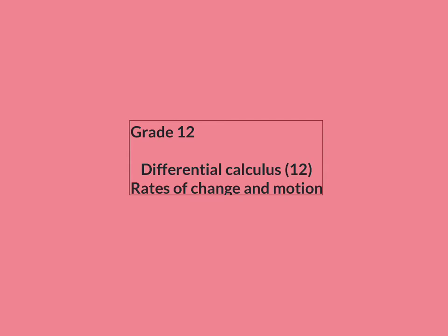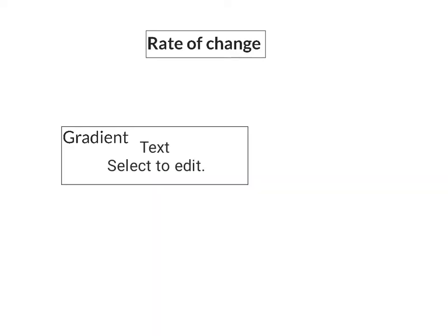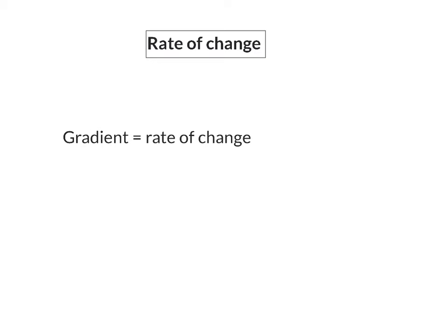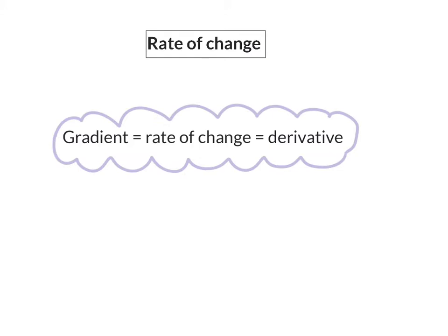In the next two lessons, we are going to have a look at how we can apply differentiation to real life situations. Today we're going to have a look at rates of change and motion. The gradient of a curve always indicates the rate of change of that function, and that means that the derivative is always the rate of change.